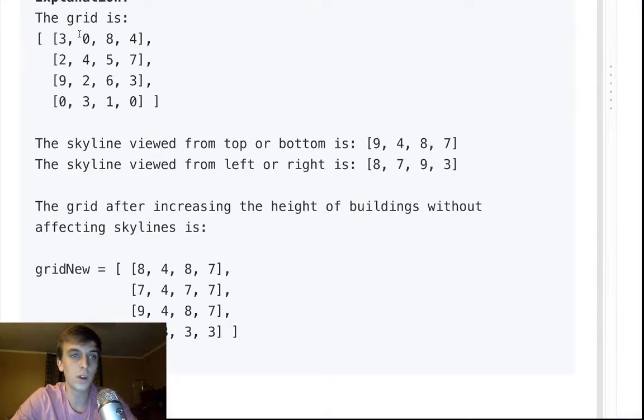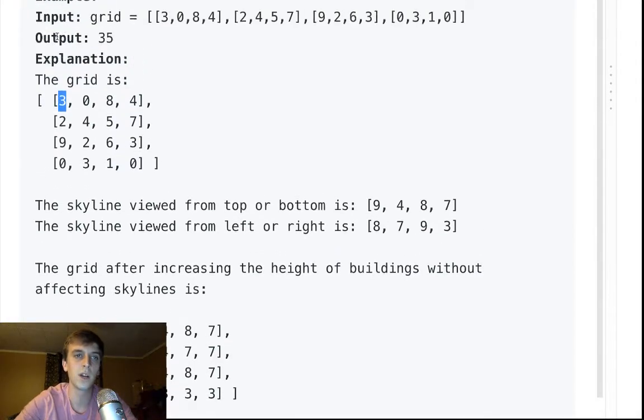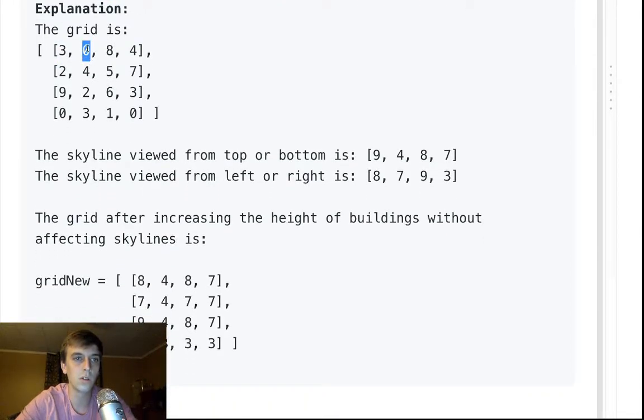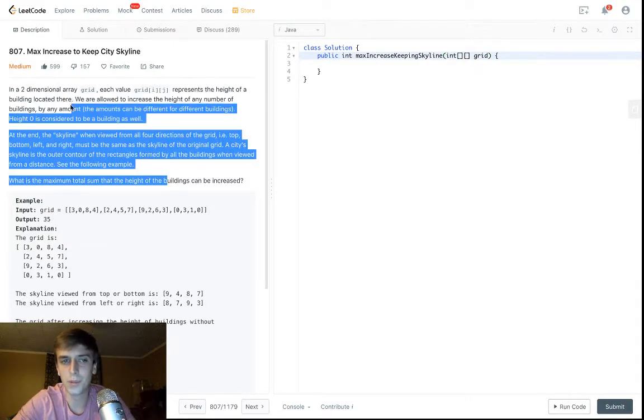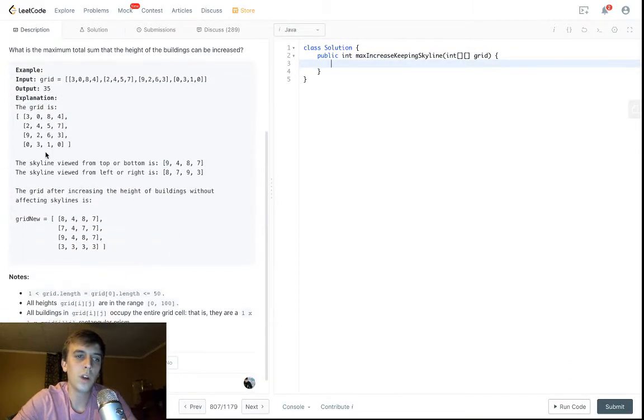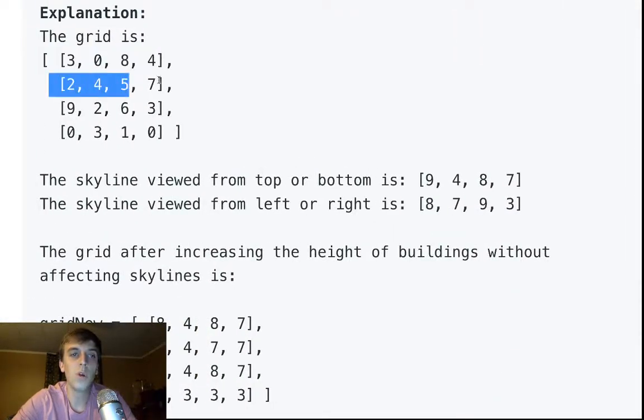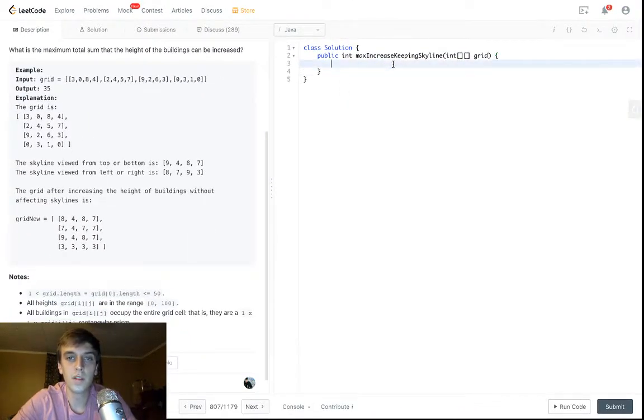What we want to do is we want to increase each of the buildings as much as we can without going past the skyline. The skyline is the maximum row, maximum column values. And as long as we do that, we're going to be adding. All we want to do is we want to find the maximum row value for each row and put it into an array, and we want to find the maximum column value of each column and put that into an array.